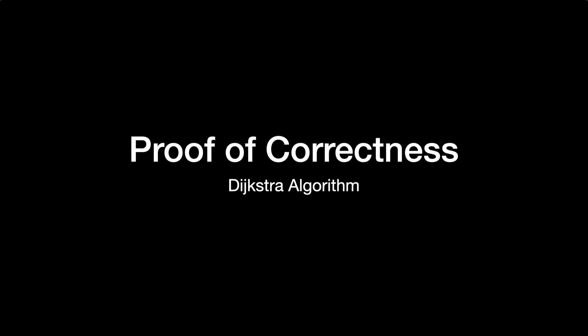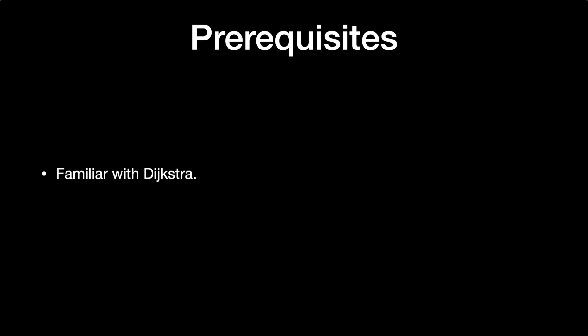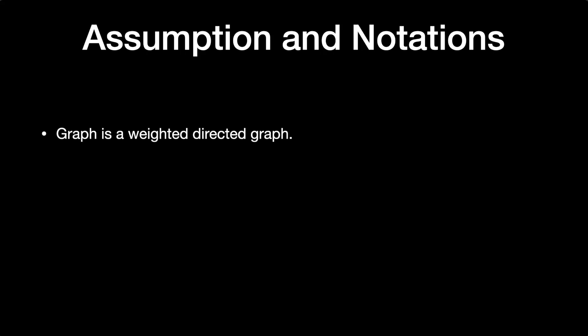Welcome to this video on the proof of correctness of Dijkstra's algorithm. Some prerequisites: you should be familiar with Dijkstra's algorithm and have a basic interest in proofs — specifically why Dijkstra always works for positive edges in a graph. We assume a weighted directed graph where all edge weights are positive, because if there are any negative edge weights, Dijkstra might not work.